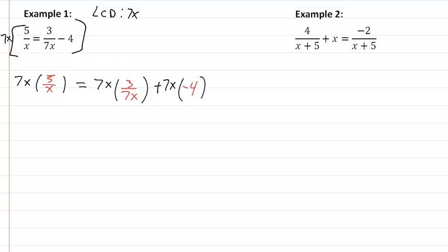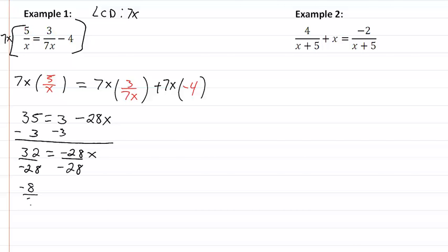Inside the red is each term that we had started with. So we're going to get 35 equal to 3 minus 28x. We'll subtract 3 from both sides and we'll get 32 equal to negative 28x. Divide by negative 28 and we're going to get negative 8 sevenths equal to x.